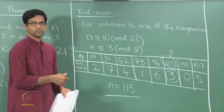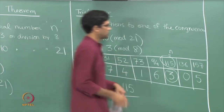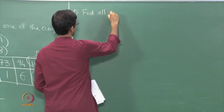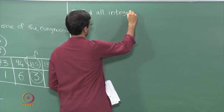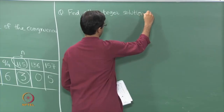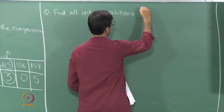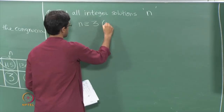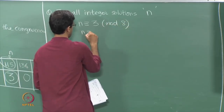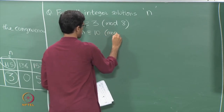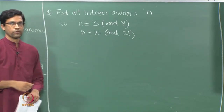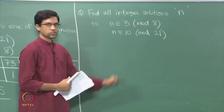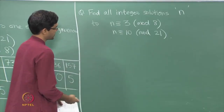Now let us also consider a modified version of this question: find all integer solutions n, allowing negative integers, to the system of congruences n congruent to 3 modulo 8 and n congruent to 10 modulo 21. We have found one solution — 115 — but can we find all integer values satisfying these same congruences?